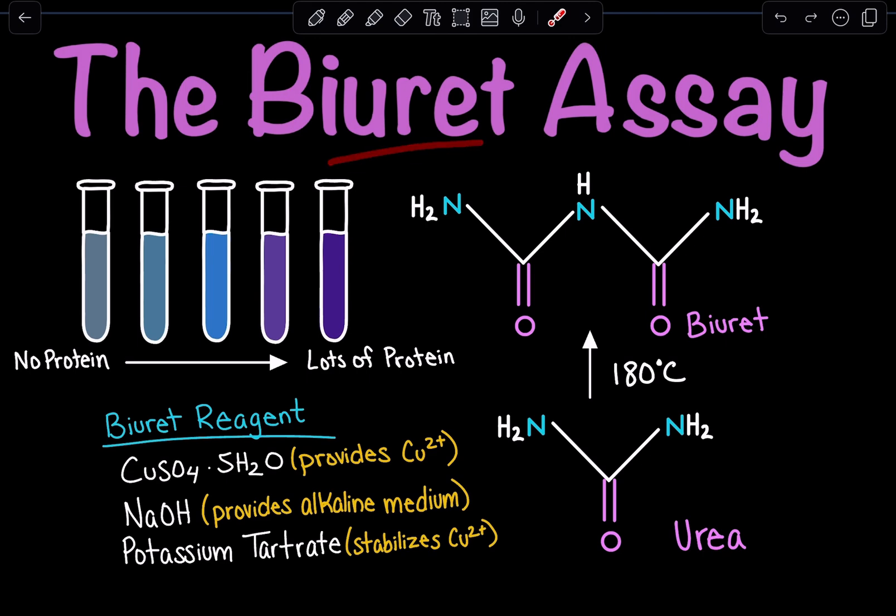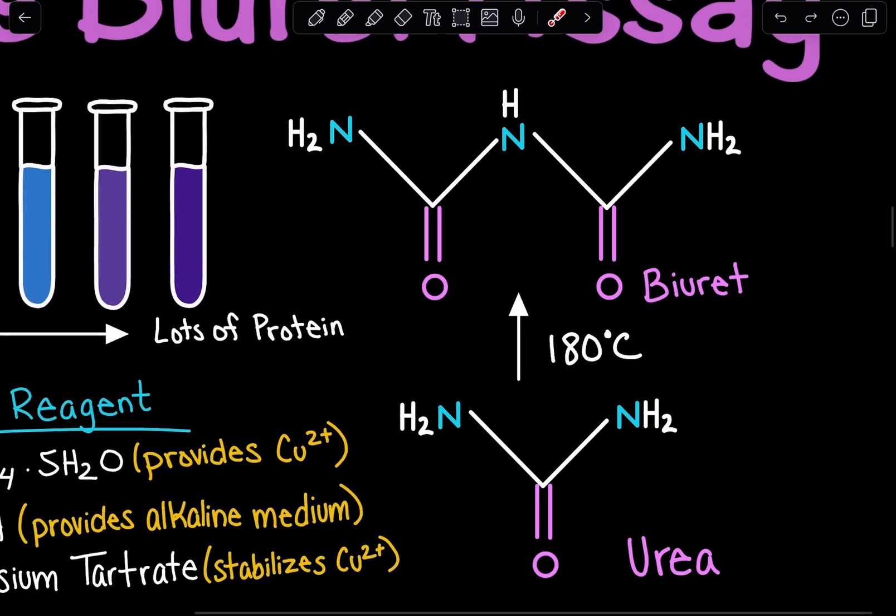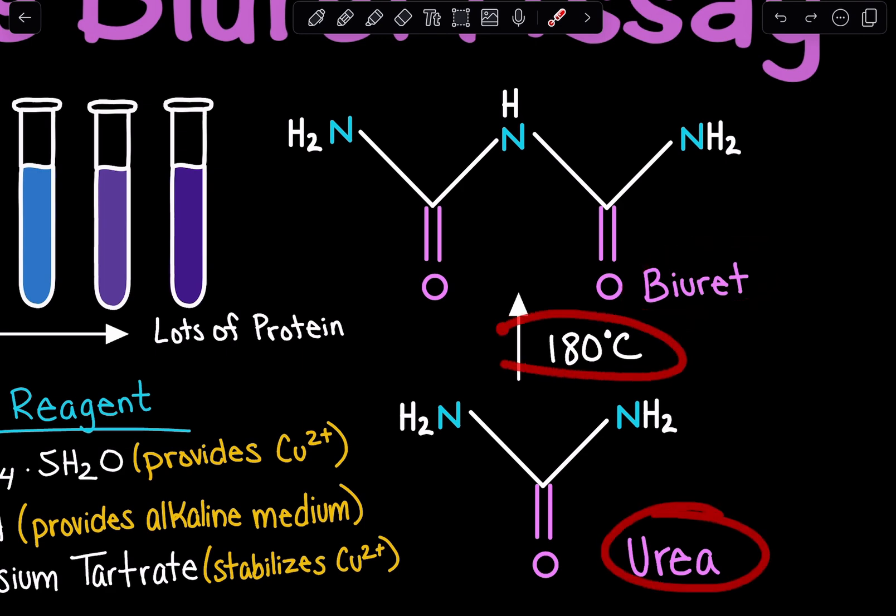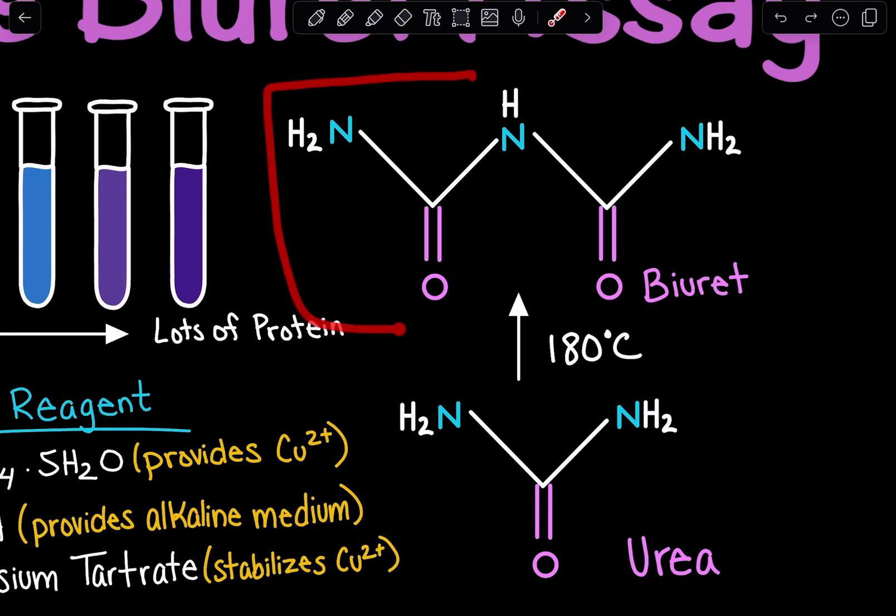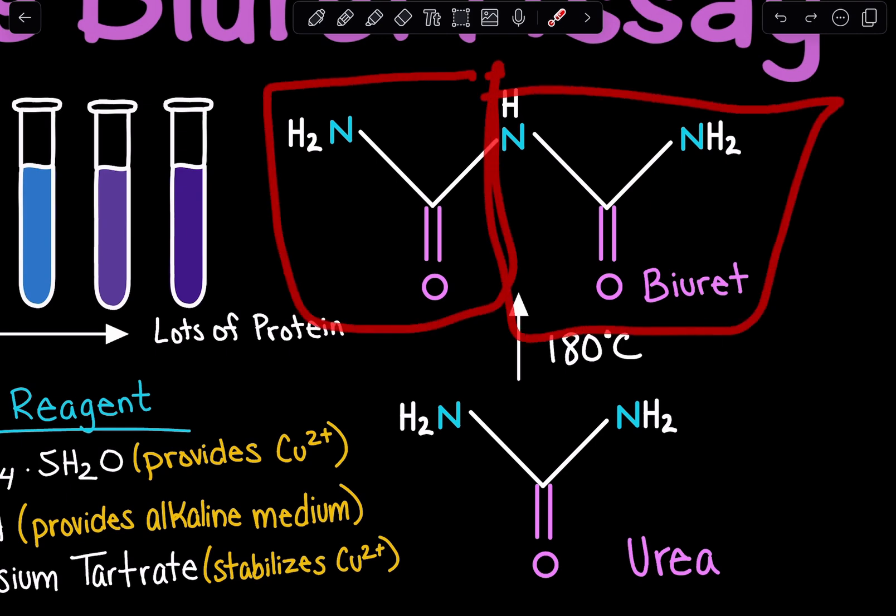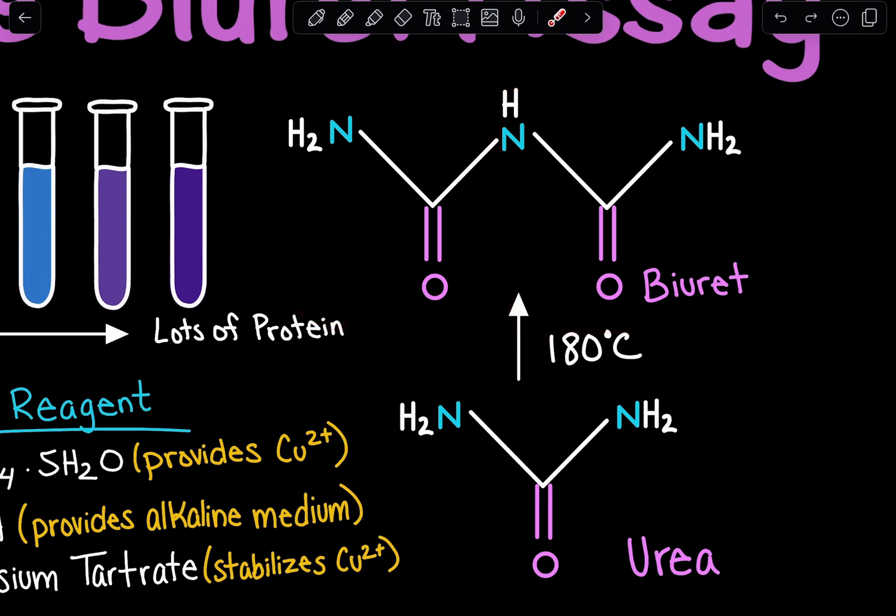But what is Biuret? Biuret is a molecule that forms upon heating urea at 180 degrees Celsius. Biuret is just two urea molecules. We can explain its name: Bi means two and then urea for urea. So Biuret is just two urea molecules joined together.